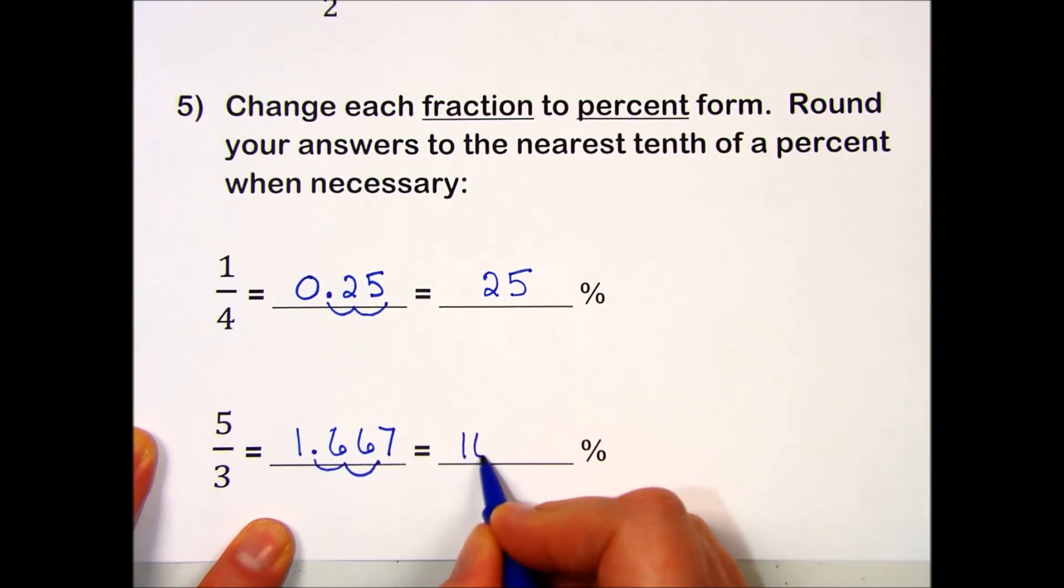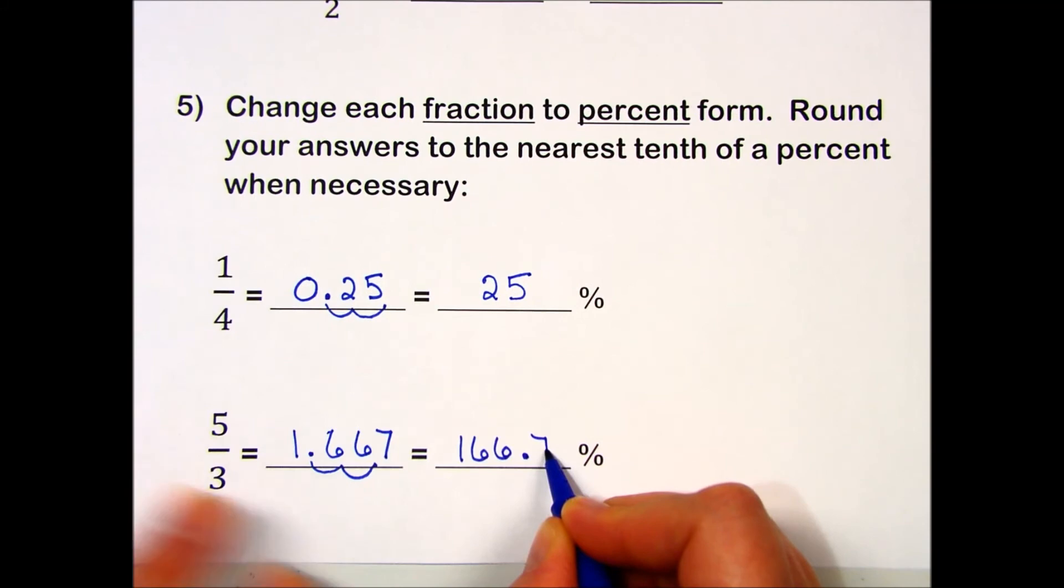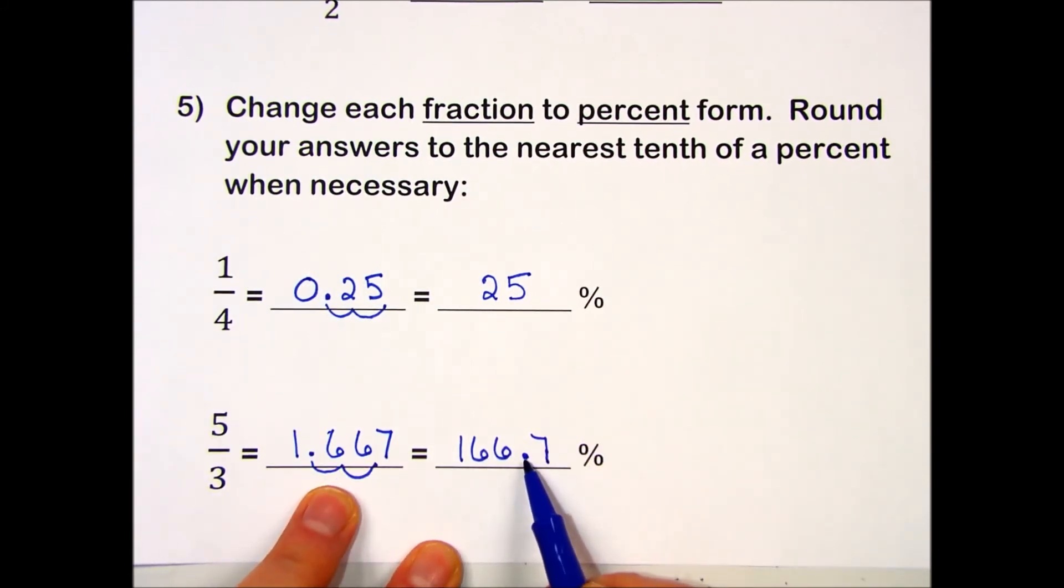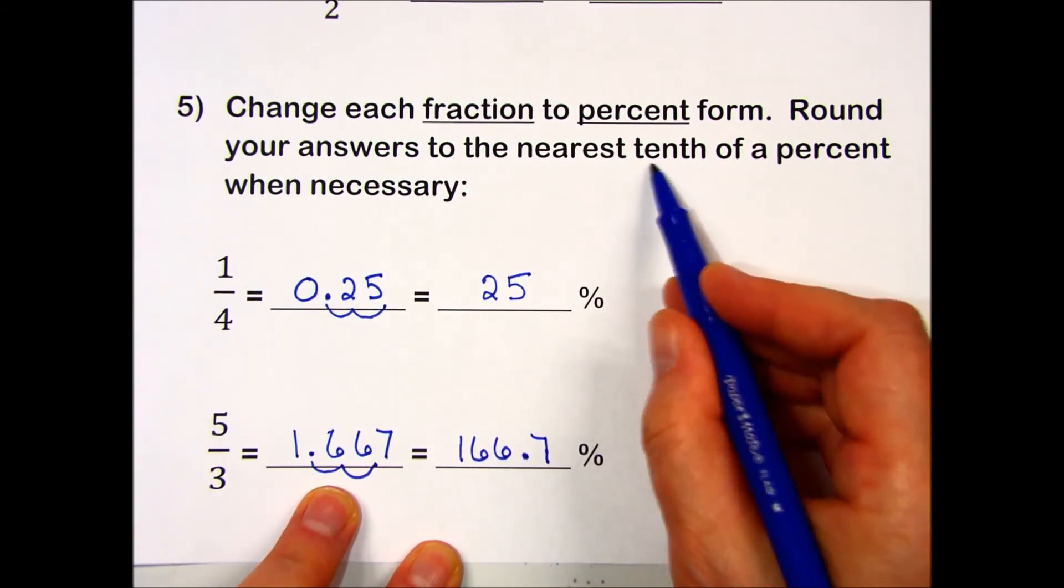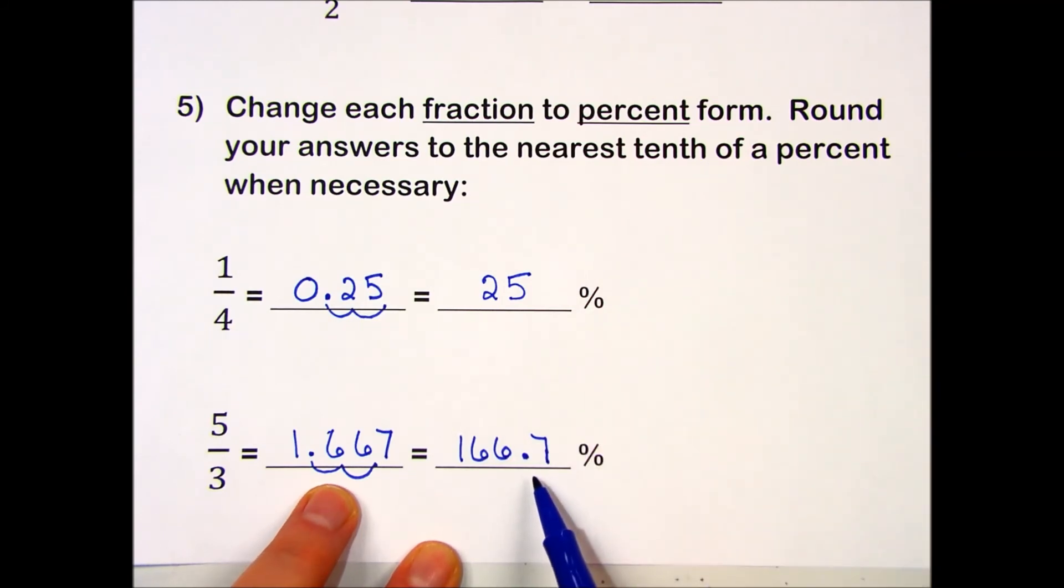I pick my decimal point up and move it two places to the right, and I have 166.7%. Double-checking, I did round to the nearest tenth of a percent for my final answer.